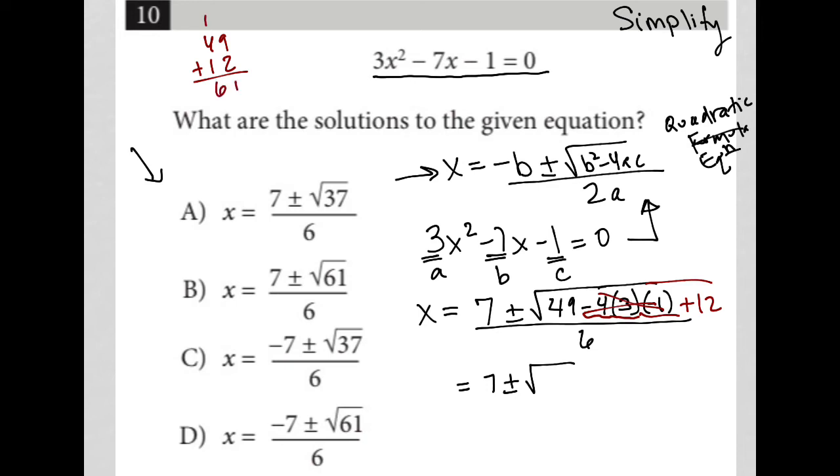So I end up with 61 under the radical, and I still have a 6 on the bottom. I cannot simplify that any further. 61 is a prime number, so I cannot reduce radical 61.